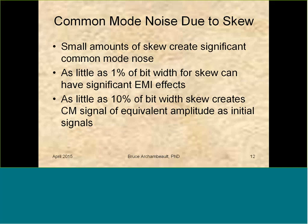Let's get into a little bit of the details. Skew is basically a delay within the pair of the differential signal. Small amounts of this in-pair delay can have a significant amount of common mode noise. As little as 1% of the bit width can cause significant EMC effects, as you'll see in a few minutes. As soon as you have about 10% of bit width of the skew, that increases the common mode signal to almost the same amplitude as the initial differential signal — which is very large by EMC standards.